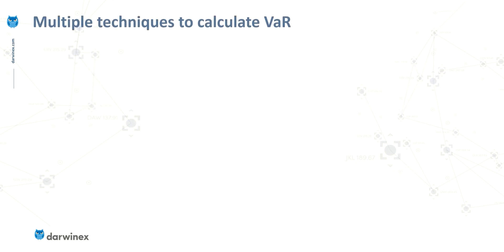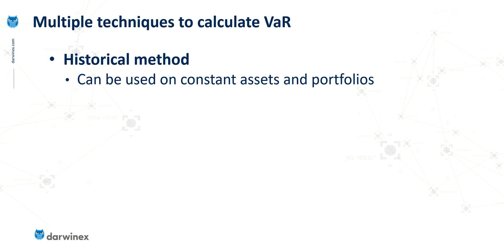There are multiple ways of calculating value at risk. The main three are: the historical method, which is really useful when you have individual assets — for example, you could calculate the value at risk for the NASDAQ or the S&P 500, or portfolios that tend to remain fairly consistent. However, the historical method is not good if portfolios are constantly changing, because you can't base a future risk assessment on something that doesn't look like it looked in the past. This probably isn't the best way for us as traders to calculate VAR, because our portfolios will be constantly changing on a day-to-day basis.